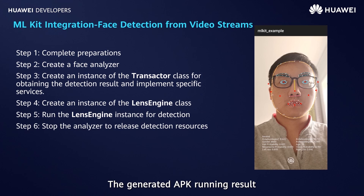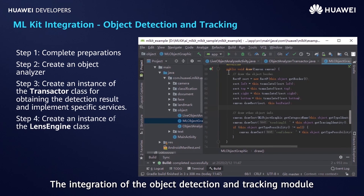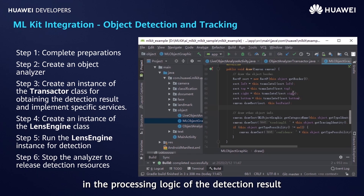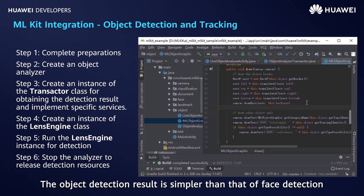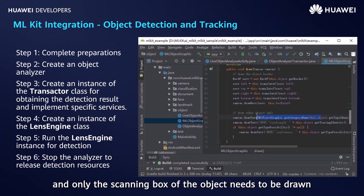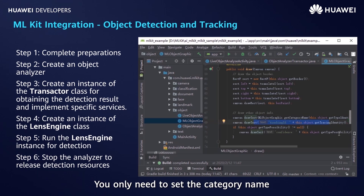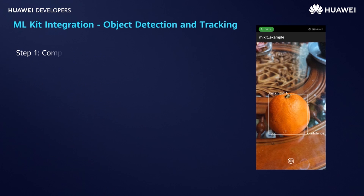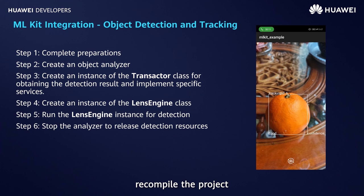After coding is complete, recompile the project. The generated APK running result is shown in the figure on the right. The integration of the object detection and tracking module is similar to that of the face detection module; the two modules differ in the processing logic of the detection result. The object detection result is simpler — only a scanning box needs to be drawn with the category name, tracking ID, and confidence set. For other implementation details, refer to the face detection code.